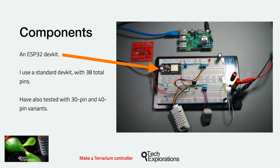It has 38 pins with a pitch between the two rows of 22.95 millimeters, and I chose it because it fits nicely on my breadboard. I've tested the exact same sketch on a few other ESP32 dev kits, such as a 40-pin and 30-pin variant including one with an integrated LiPo battery and charging circuit, and they worked perfectly. I also tested a modified version of the sketch with an Arduino Nano 33 IoT and it worked equally well.